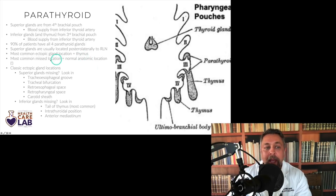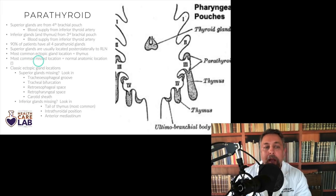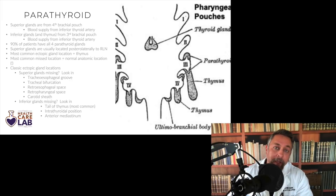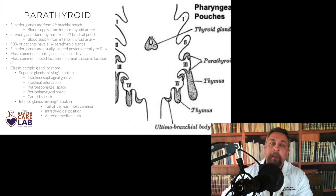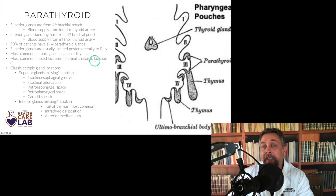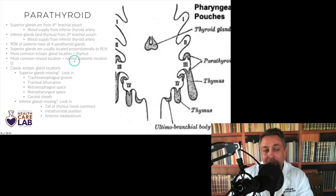They may stop in the thymus. So when you look for these during a four-gland exploration and can't find all four glands, the most common mislocation is actually a gland in a normal anatomic location — you just weren't able to find it. Sometimes people go about their dissection and cannot find a gland, and again, the most common mislocation is the normal anatomic position. Couldn't see it for some reason.